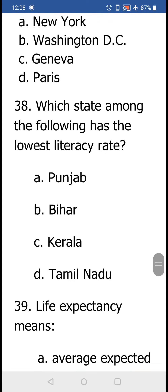Question number 38: Which state among the following has the lowest literacy rate — (a) Punjab, (b) Bihar, (c) Kerala, or (d) Tamil Nadu? The lowest literacy rate is in Bihar.